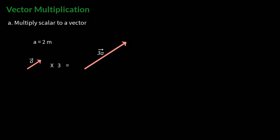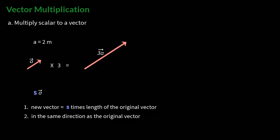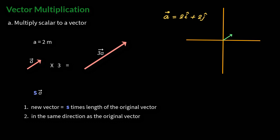More generally, if vector a is multiplied by a scalar s, the length of the new vector would be s times the original vector length, and in the same direction. However, if the scalar is negative, the direction of the new vector will be opposite to that of the original vector. For example, if you have a vector 2i + 2j and multiply it by three, you get a vector three times the length. But if you multiply by minus three, you get a vector three times the length but in the opposite direction.